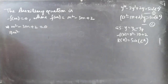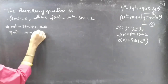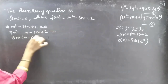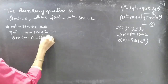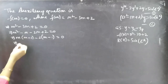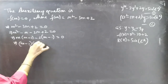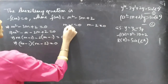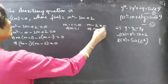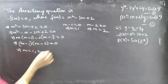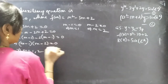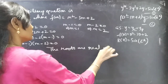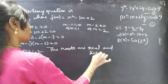To find the roots, split -3m as -m - 2m. So m² - m - 2m + 2 = 0. Taking m common from the first two terms: m(m - 1). Taking -2 common from the next two terms: -2(m - 1) = 0. Taking (m - 1) common gives (m - 1)(m - 2) = 0. Equating each factor to zero: from m - 1 = 0, m = 1; from m - 2 = 0, m = 2. The roots are m = 1 and m = 2, which are real and distinct.